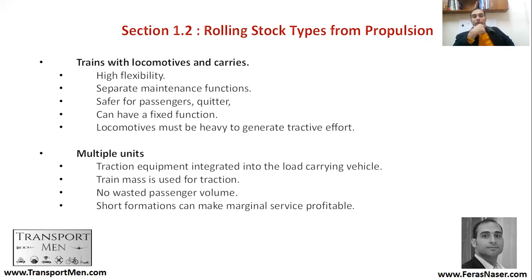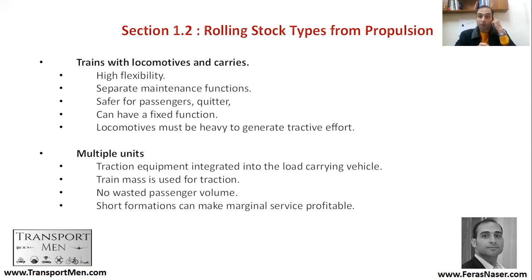What are the types of propulsion for rolling stock? There are two types. First, the locomotive type, where the locomotive carries and drags all the carriages — very common in the States for freight. The locomotive type offers great flexibility: you can add any number of carriages, calculate the traction effort, and determine how many carriages can be added.